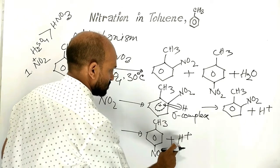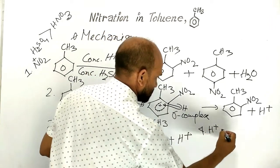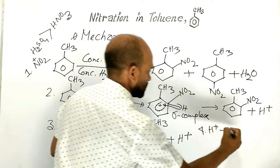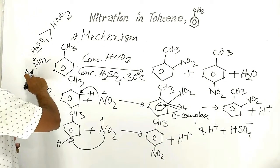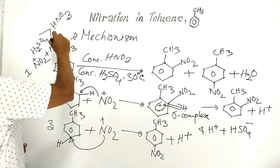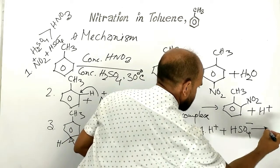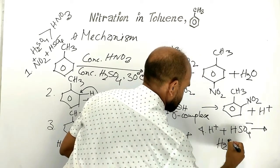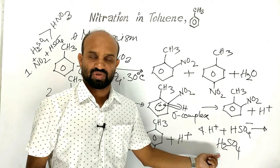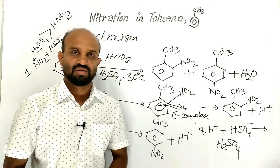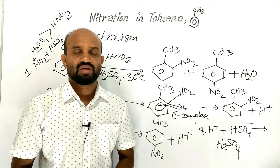What about this proton? Step four: the proton, which is positively charged, combines with the bisulfate ion produced in step one. Positive charge and negative charge combine to give sulfuric acid. At step four, sulfuric acid is regenerated. That is, sulfuric acid in the reaction acts as a catalyst — that is why it remains unchanged after the chemical reaction. It produces nitronium ion as the electrophile.